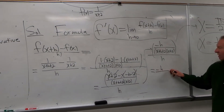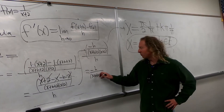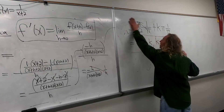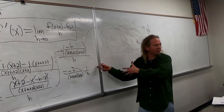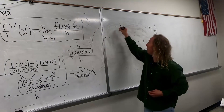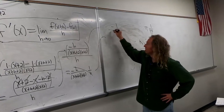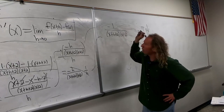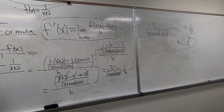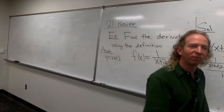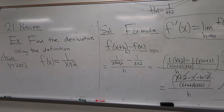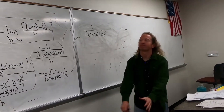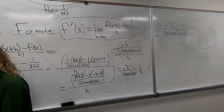This is why I assigned that delta x problem — I figured most people would get stuck on it, but it's good practice. So stuff cancels, and we have negative h over x plus h plus 2 times x plus 2, all over h. In college algebra, this is where you'd stop and call it the difference quotient. We're almost done — the next step is just a formality.